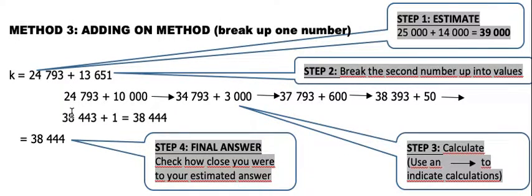Let's quickly have a look. We're going to start with 24,793 and the first value of this number will be 10,000. So 24,793 plus 10,000 will give me 34,793.